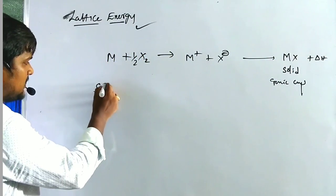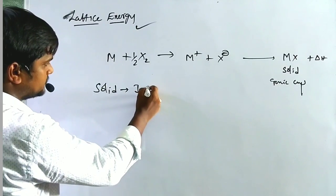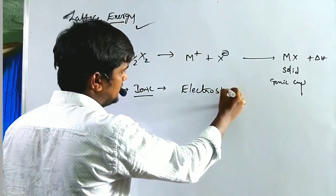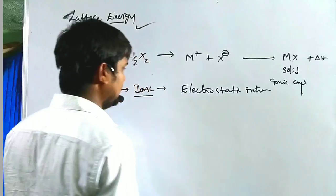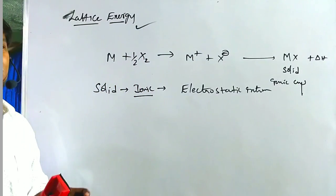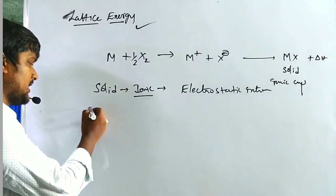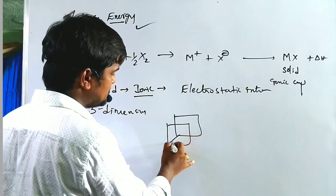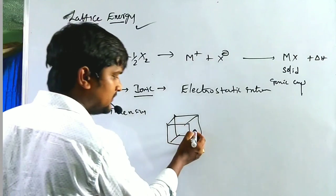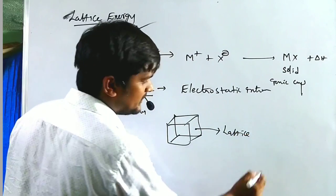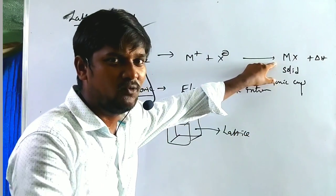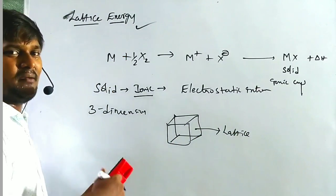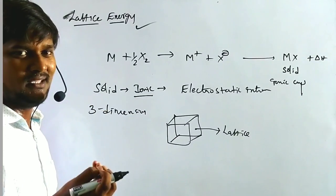Solids are ionic compounds formed by ionic bonds, meaning electrostatic interaction. These electrostatic interactions in solids form a three-dimensional arrangement, which occupies some space — this is called a lattice. The energy required to form one mole of this three-dimensional crystalline solid is called lattice energy.